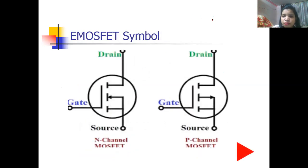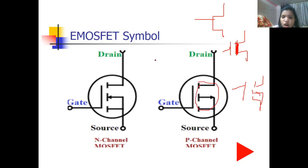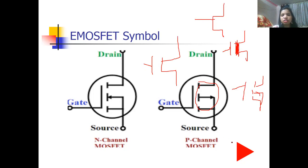Regarding symbols: the symbol of a regular FET is distinct. In depletion MOSFET, the symbol shows a dark (solid) channel line, indicating a channel exists during fabrication. In enhancement type MOSFET, a dashed or broken line is used to indicate that no channel is present during fabrication. A dark line means channel is there; a broken line means channel is not there.